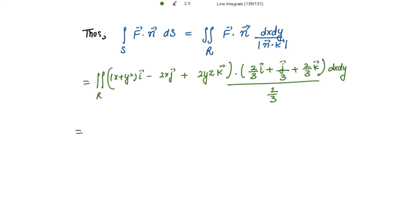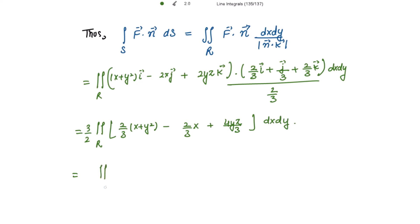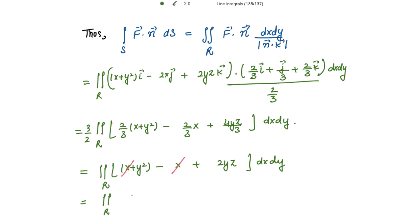Over the projection R, we write (3/2) outside the double integral. Calculating the dot product of F⃗ and n⃗: (2/3)(x + y²) - (2/3)x + (4yz/3). Taking 2/3 common, we get x + y² - x + 2yz dx dy. The x terms cancel, leaving the double integral over R of (y² + 2yz) dx dy.